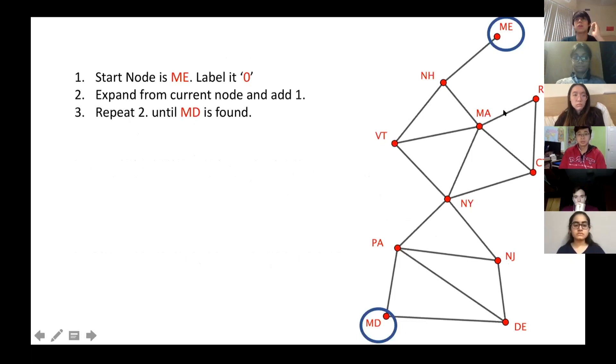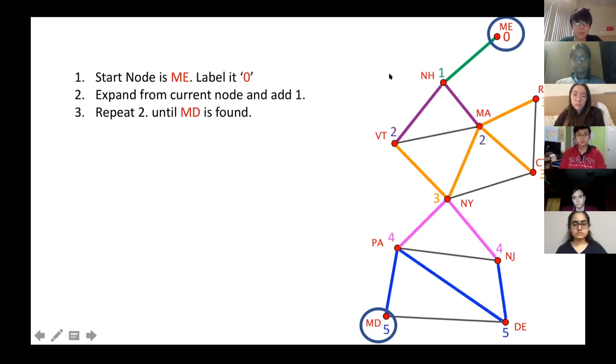To solve these problems, computer scientists have come up with a very nice and very simple procedure to find a shortest path. We call it the breadth first search or BFS for short. We are going to do it now. I'm going to list the instructions on the left, and we are going to solve it together on the right. To do it, we are going to start with labeling the start node, which is Maine with zero. Then from Maine, you can expand to New Hampshire, so we put one at New Hampshire. From New Hampshire, you can only go to Vermont and Massachusetts, so we will put two here. If you do the same thing from Vermont and Massachusetts, you can only go to New York, Connecticut and Rhode Island, and we put three there. We do it again and again until we find Maryland, which is five.